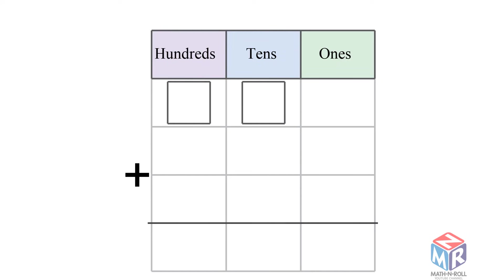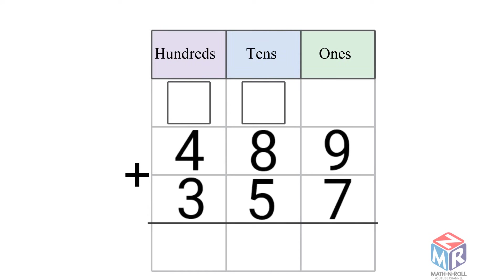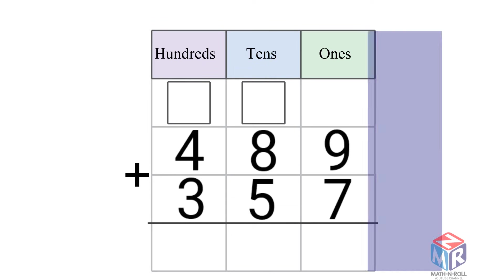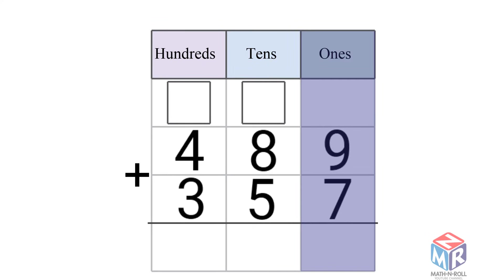Let's try another example without drawing: 489 plus 357. First, we add the ones. Nine plus seven is equal to 16. 16 is two-digit, so it does not fit into the ones place. So we regroup it as one ten and six ones. We add the extra ten to the tens column.